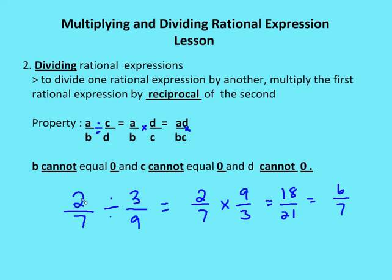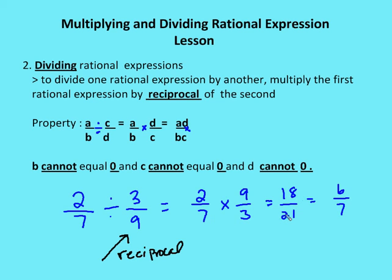For example, 2 over 7 divided by 3 over 9: we flip the second expression to get 9 over 3, so we have 2 over 7 times 9 over 3, which equals 18 over 21. This is not simplified because 18 and 21 share a common factor of 3. Dividing both by 3 gives us 6 over 7 as the final simplified result.